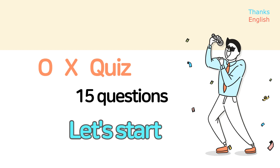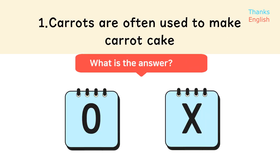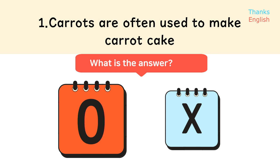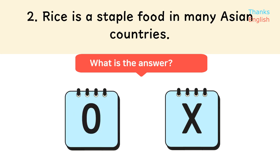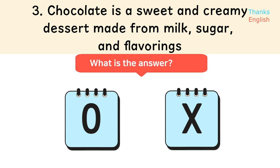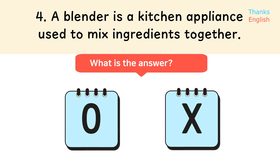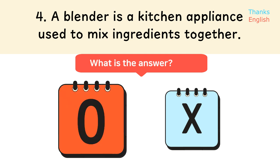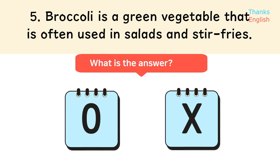15 questions. Let's start. 1: Carrots are often used to make carrot cake. 2: Rice is a staple food in many Asian countries. 3: Chocolate is a sweet and creamy dessert made from milk, sugar, and flavorings. 4: A blender is a kitchen appliance used to mix ingredients together. 5: Broccoli is a green vegetable that is often used in salads and stir-fries.